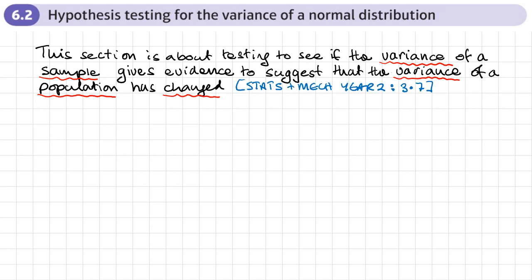You can compare this with what you did in the Stats and Mechanics Year 2 book, section 3.7, where we measured the mean of a sample and used the mean of the sample to work out whether there's evidence to suggest that the mean of the population has changed. So that was a hypothesis test about the mean of the population; this is a hypothesis test on the variance of the population.